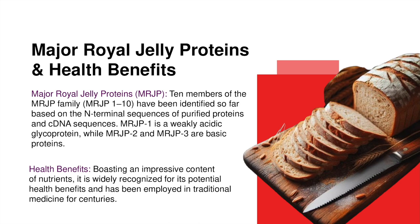Ten members of the major royal jelly protein family have been identified so far, based on the N-terminal sequences of purified proteins and cDNA sequences. Major royal jelly protein 1 is a weakly acidic glycoprotein, while major royal jelly proteins 2 and 3 are basic proteins.